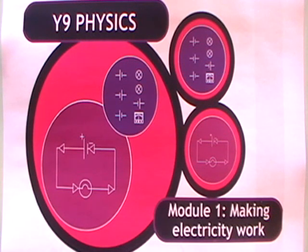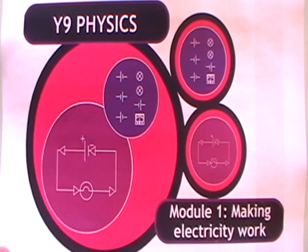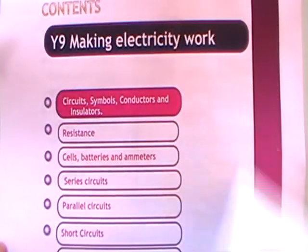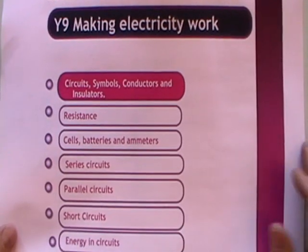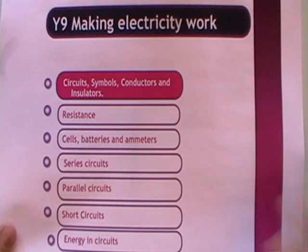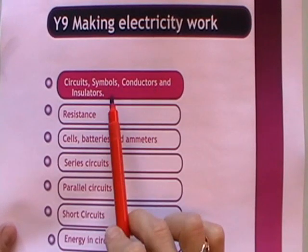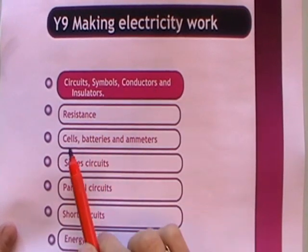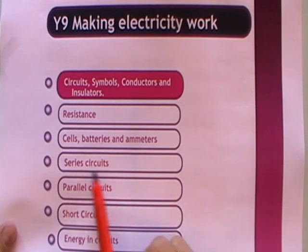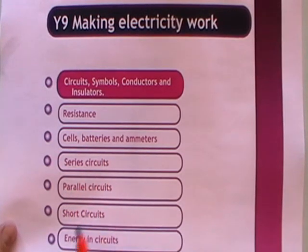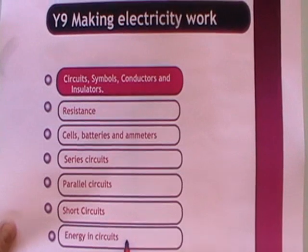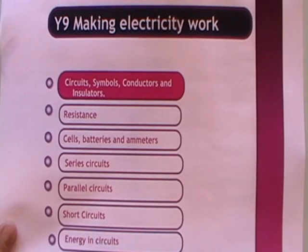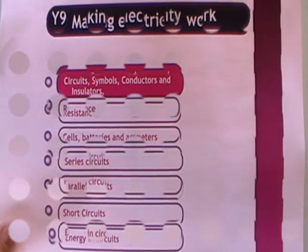This is a podcast for Year 9 Physics covering Module 1, which is called Making Electricity Work. We have a whole lot of topics in making electricity work: circuits, symbols, conductors and insulators, resistance, cells, batteries and ammeters, series circuits, parallel circuits, short circuits, and energy and circuits. We're starting off with circuits, symbols, conductors and insulators.